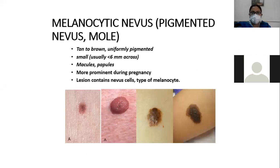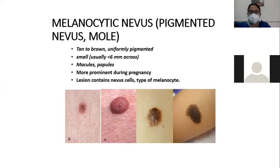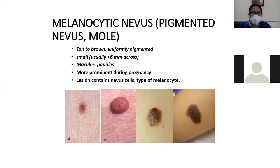A melanocytic nevus, or pigmented nevus, or mole appears as a tan to brown, uniformly pigmented lesion. The nevus is usually small — less than 6 mm in size. The size is very important; the nevus is usually less than 6 mm. It appears as a macule or papule. Nevus may be more prominent during pregnancy. The lesions contain nevus cells, which are types of melanocytes.